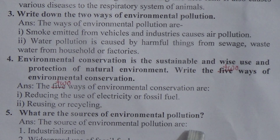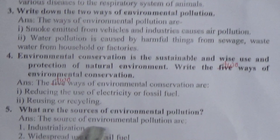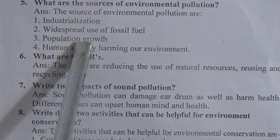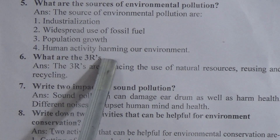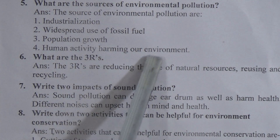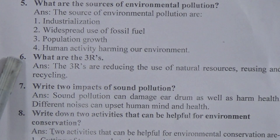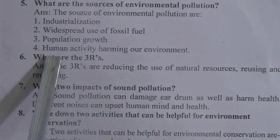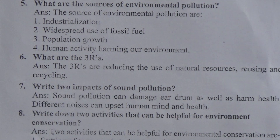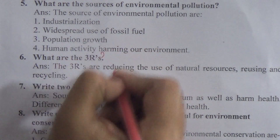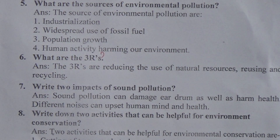Question 5: What are the sources of environmental pollution? Answer: The sources of environmental pollution are — first, industrialization; second, widespread use of fossil fuels; third, population growth; fourth, human activities harming our environment.